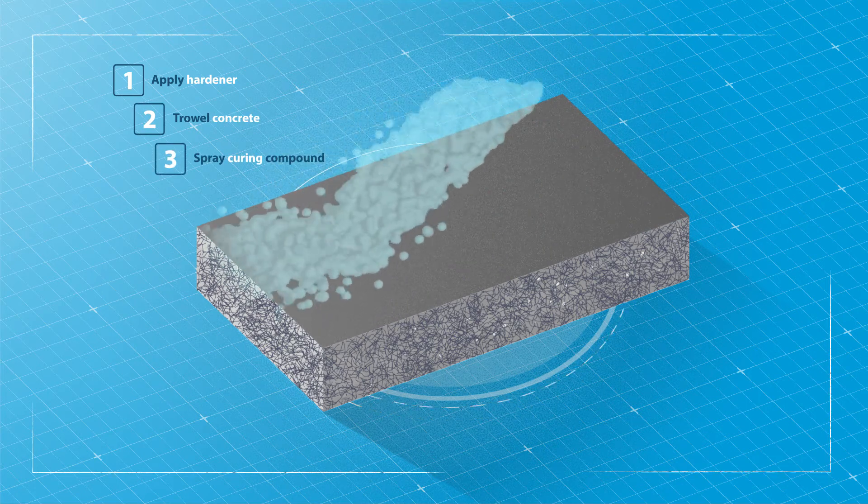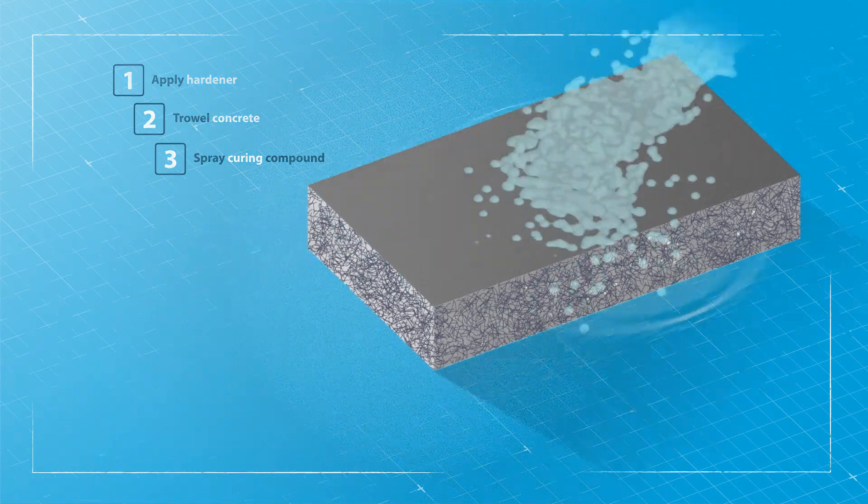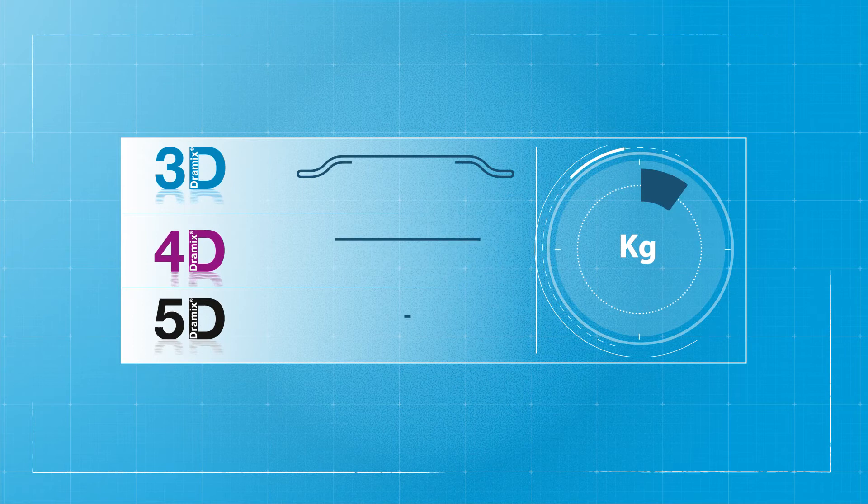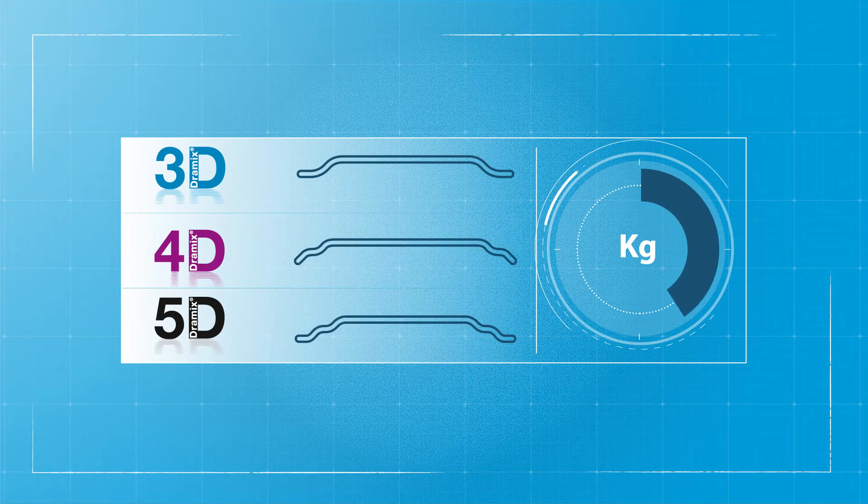Finish off with a curing compound to avoid drying, shrinkage, and cracking. The final properties of your structure not only depend on the type and dosage of fibers in concrete, but also on how you mix them together.